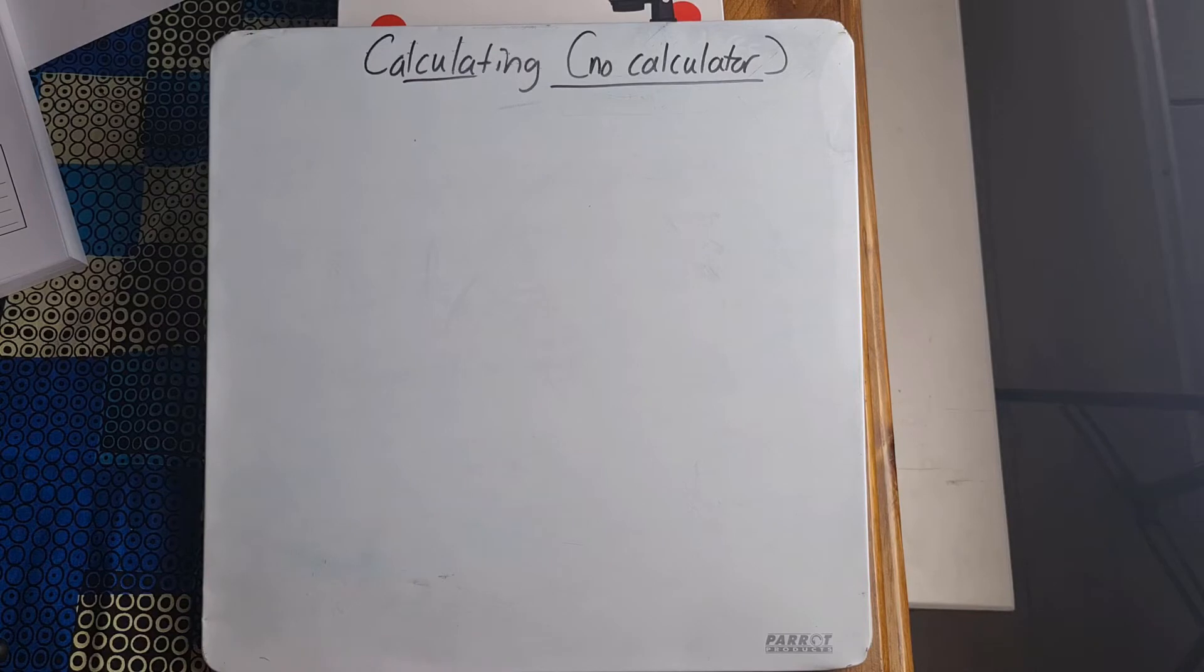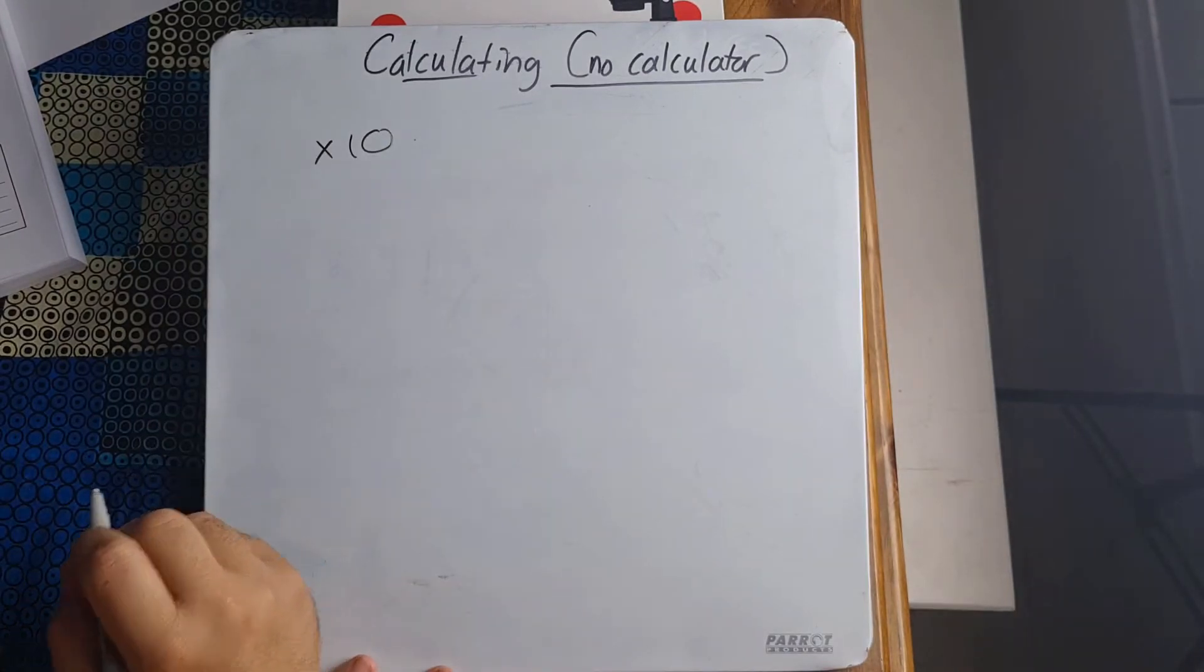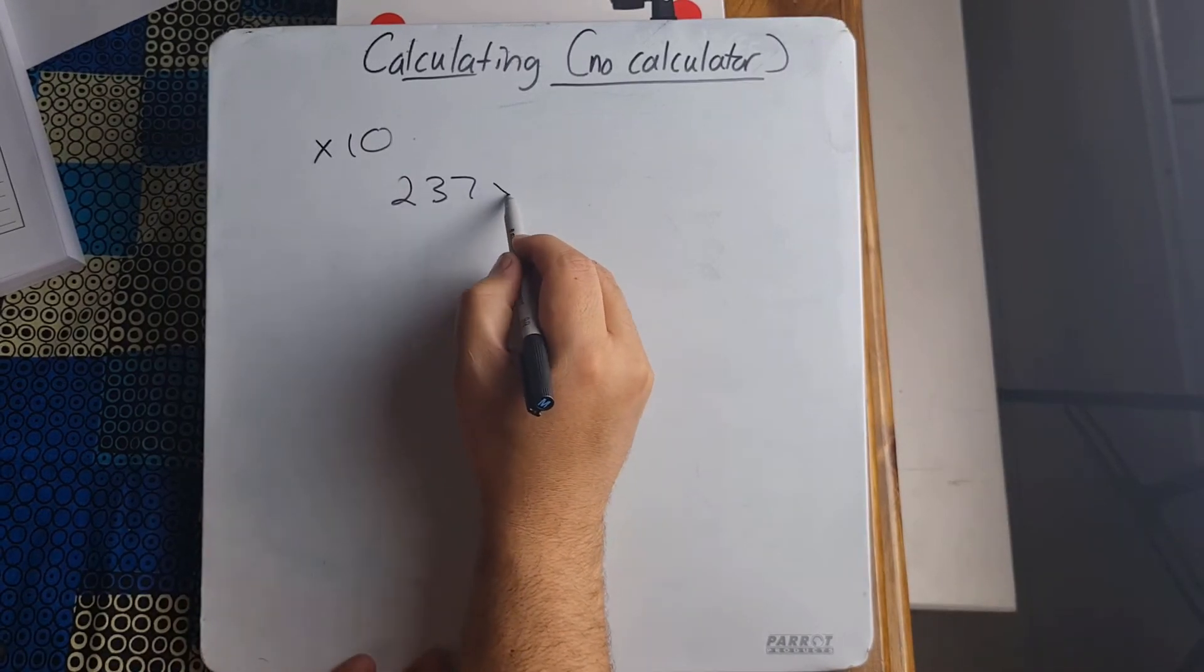When we multiply, for example by 10, all we need to do is just add the appropriate number of zeros to an existing number. So if I'm saying 237 multiplied by 10, what am I essentially saying? I'm just adding a zero and there's my answer.